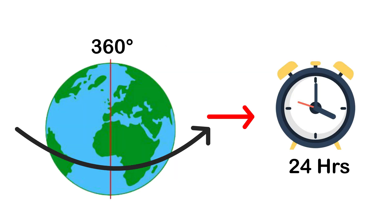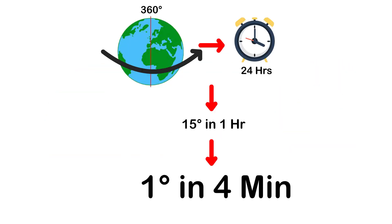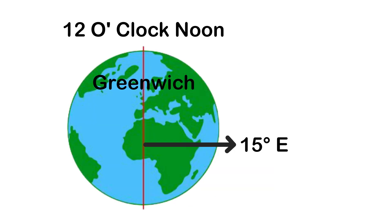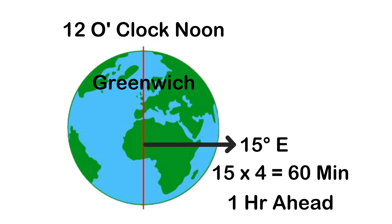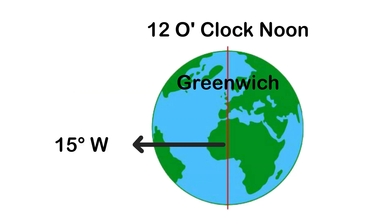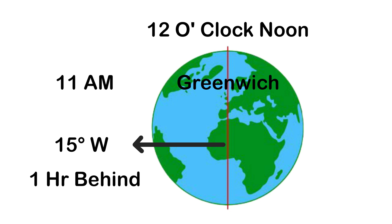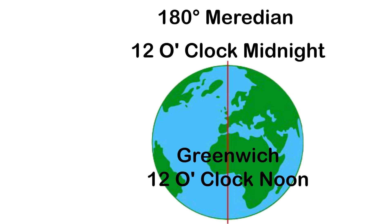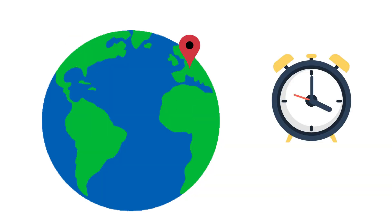The rate of difference can be calculated as follows: the earth rotates 360 degrees in about 24 hours, which means 15 degrees an hour or one degree in four minutes. Thus, when it is 12 noon at Greenwich, the time at 15 degrees east of Greenwich will be 15 × 4 = 60 minutes, that is one hour ahead of Greenwich time, which means 1 pm. But at 15 degrees west of Greenwich, the time will be behind Greenwich time by one hour, that is 11 am. Similarly, at 180 degrees it will be midnight when it is 12 noon at Greenwich.